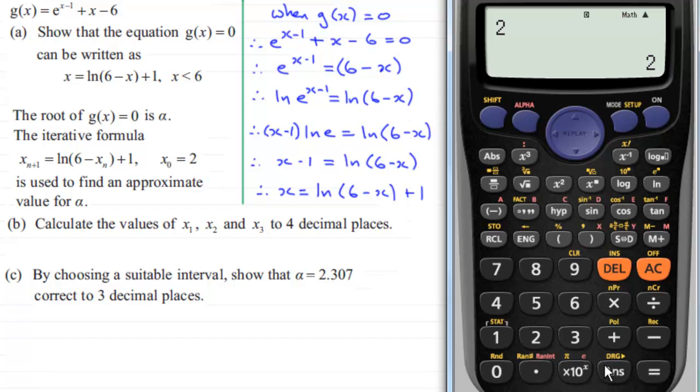Now this is stored as the answer. And what we do next is we enter our equation here, the natural log of 6 minus xₙ. But we can't enter the xₙ, we just enter it as answer.